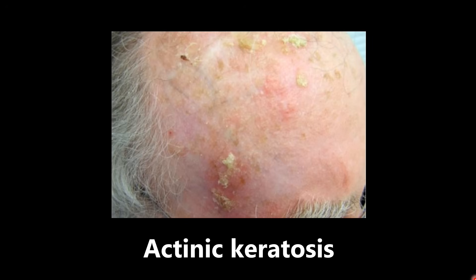This, on the other hand, is an example of actinic keratosis, also called solar keratosis. The description is clearly different from seborrheic keratosis — this is a crusty, scaly appearance. It doesn't look stuck-on and doesn't have that dark brown color. This is a precursor for cancer — specifically squamous cell carcinoma. Know the difference between seborrheic keratosis and actinic or solar keratosis. Solar, obviously, because it can be associated with prolonged sun exposure.